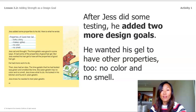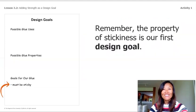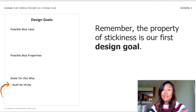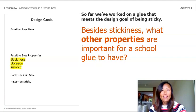Today let's think about another property we would like our glue to have. What property have we been designing our glues to have? Stickiness — and that is our first design goal. Engineers usually have a few different design goals when designing something, and they also think about properties they do not want, like Jess not wanting his gel to smell or be green.